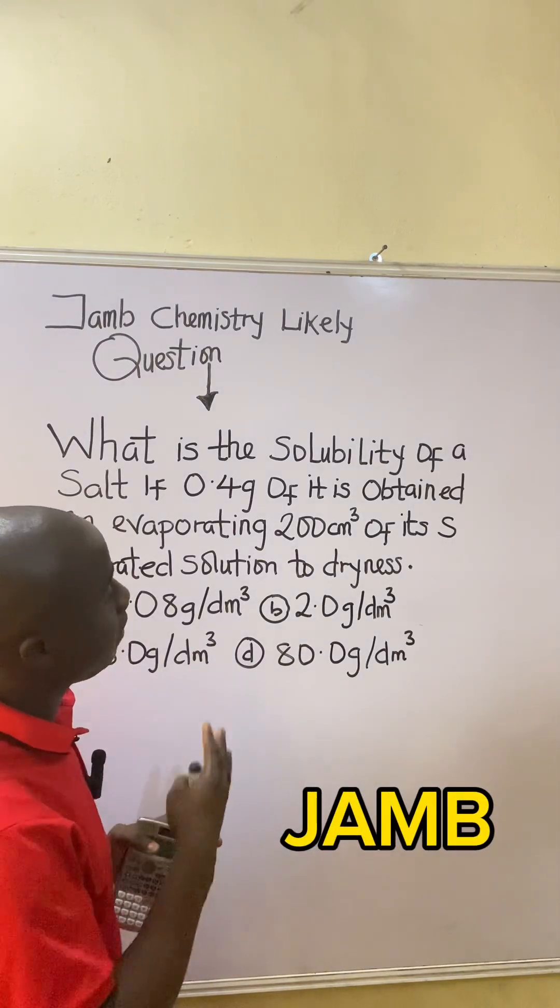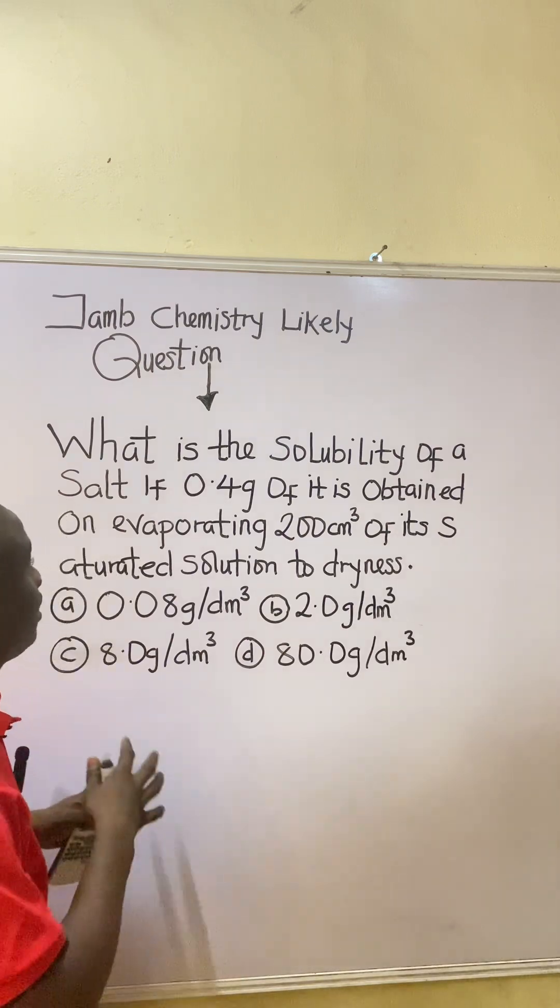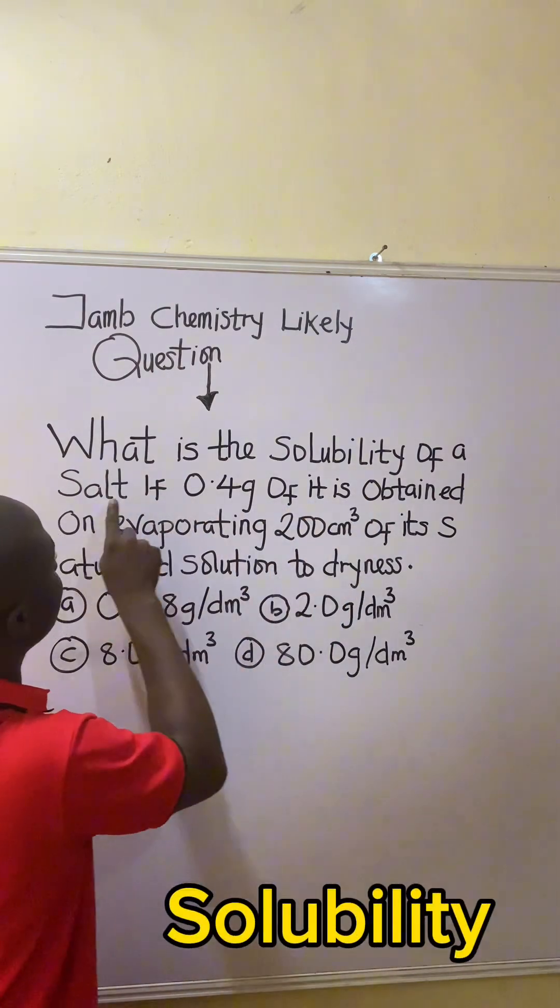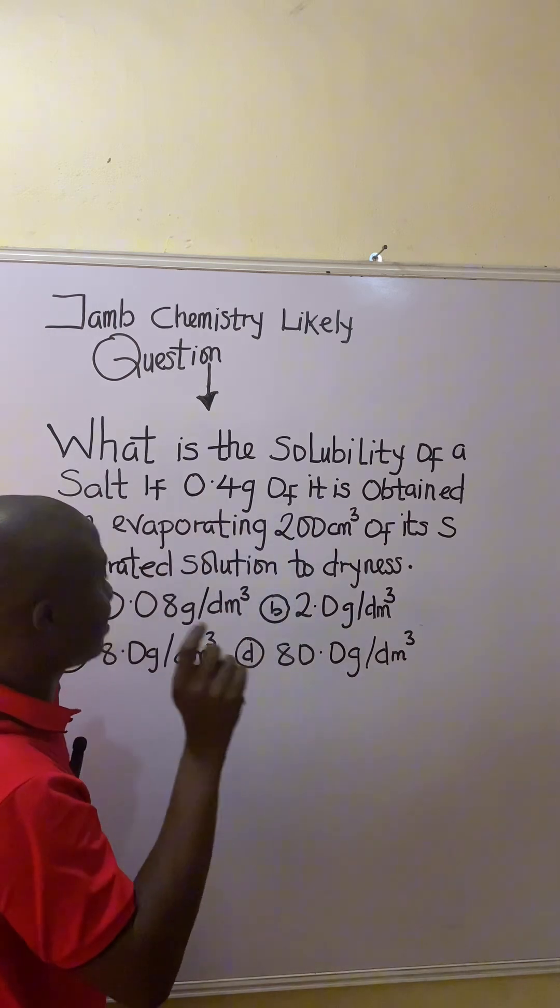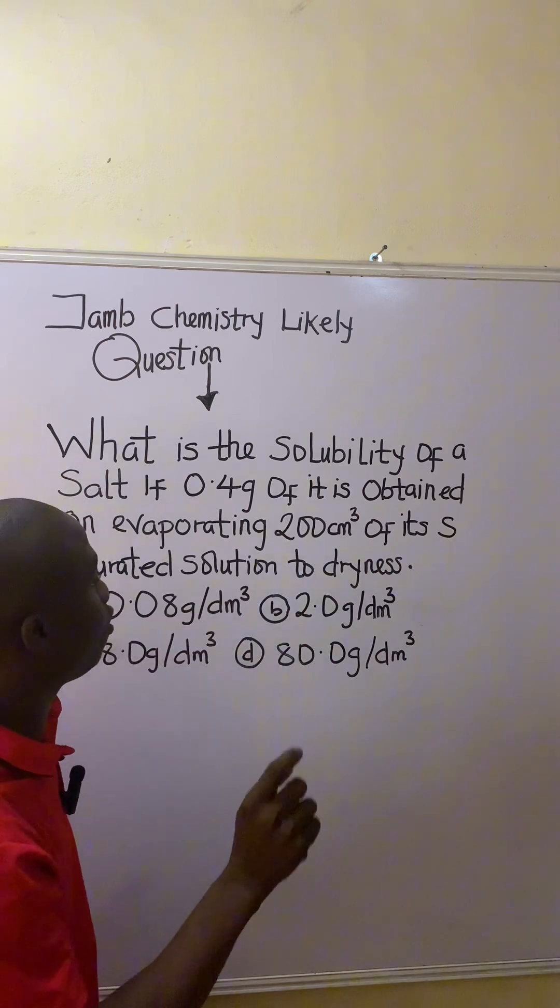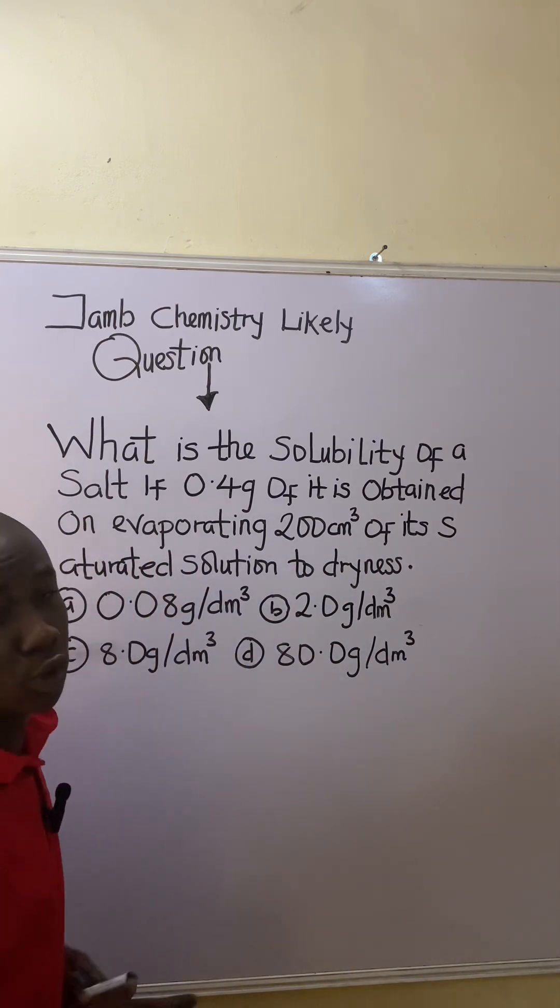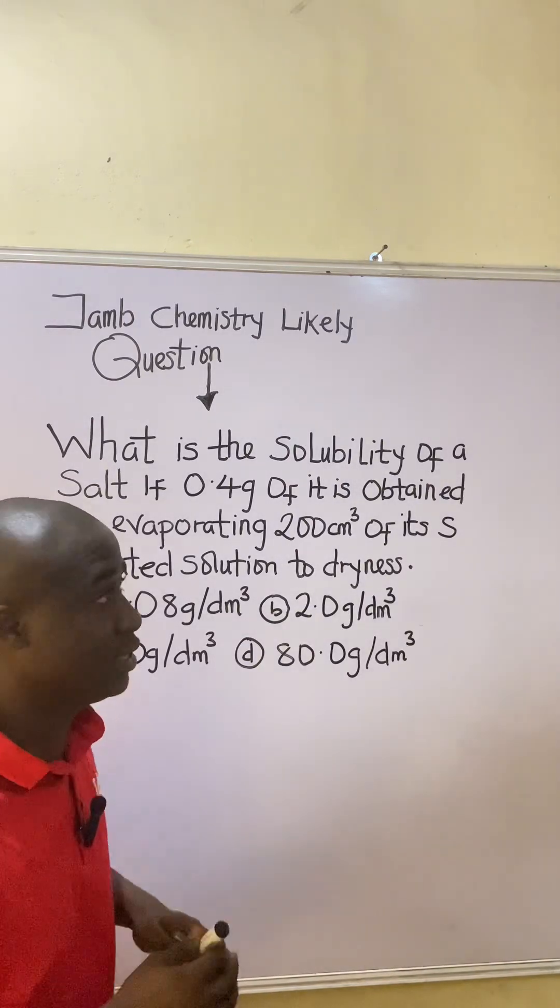You are writing the JAMB exam and you came across this question. What do you do? It is very easy. The question says: what is the solubility of a salt if 0.4 grams of it is obtained on evaporating 200 cm³ of its saturated solution to dryness? Now looking at this question, it is very easy.